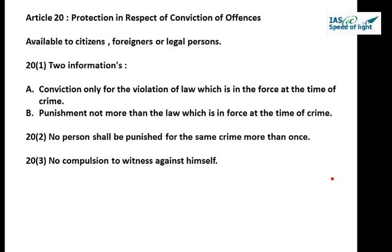Now, Article 20, under the right to freedom — let us read from PM Bakshi, page number 52. Article 20 is titled 'Protection in respect of conviction for offenses.' Part 1 says no person shall be convicted of any offense except for a violation of a law in force at the time of commission of the act charged as an offense. This is available to citizens, foreigners, and all legal persons. It contains two protections: conviction only for violation of law in force at the time of the crime, and the punishment shall not be more than what was prescribed under the law at that time.